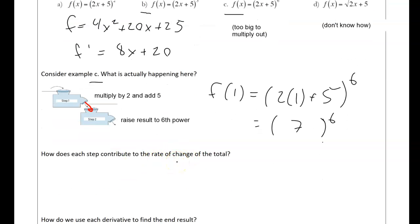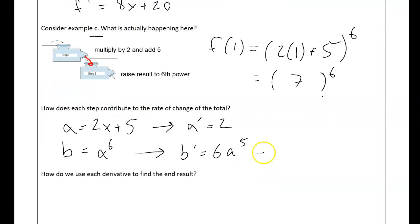But what I am worried about is this question: how do we find the rate of change of the total? Let's make two other functions. Let's make function a be 2x plus 5, and let's make function b be a to the sixth. If I did the derivative of a, a prime would be 2. If I did the derivative of b, b prime would be 6a to the fifth, which is equal to 6 times 2x plus 5 to the fifth, because that was my a.